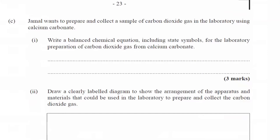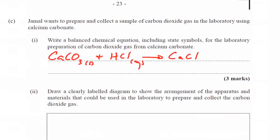Part C: Jamal wants to prepare and collect a sample of carbon dioxide gas in the laboratory using calcium carbonate. Write a balanced chemical equation including state symbols for the laboratory preparation of carbon dioxide gas from calcium carbonate. So calcium carbonate is a solid reacting with HCl acid, which gives us calcium chloride, water H2O liquid, and carbon dioxide CO2 gas. We have two Cl on the right and one on the left, so we put a two in front of the HCl, and that should give us three marks.